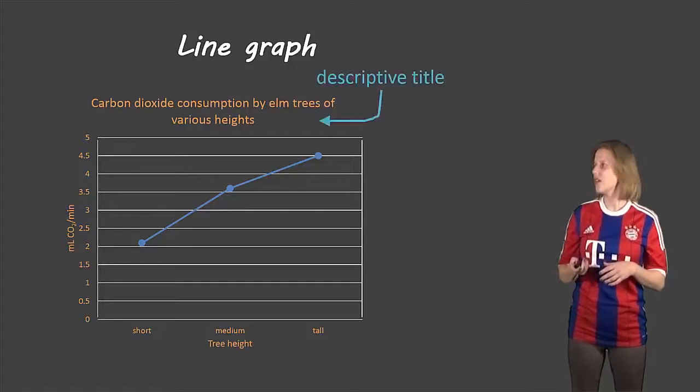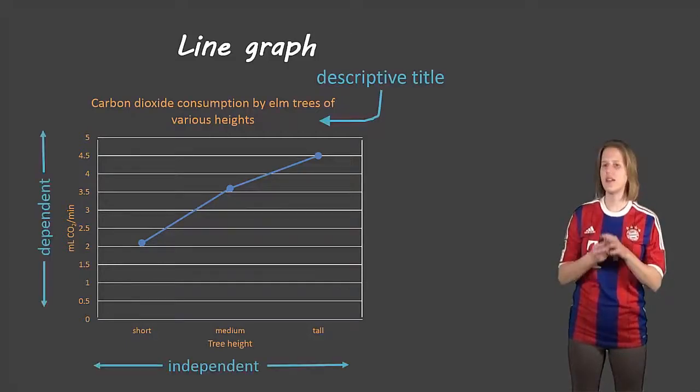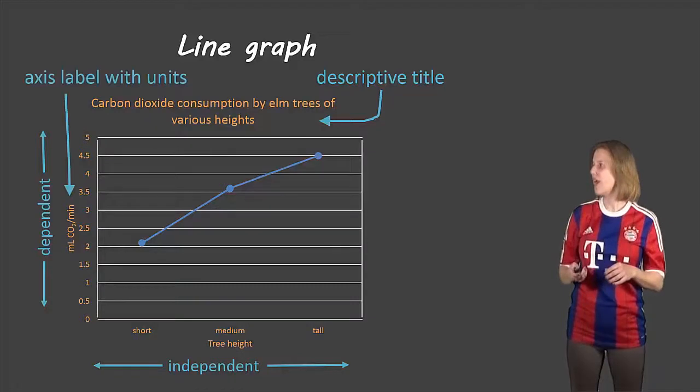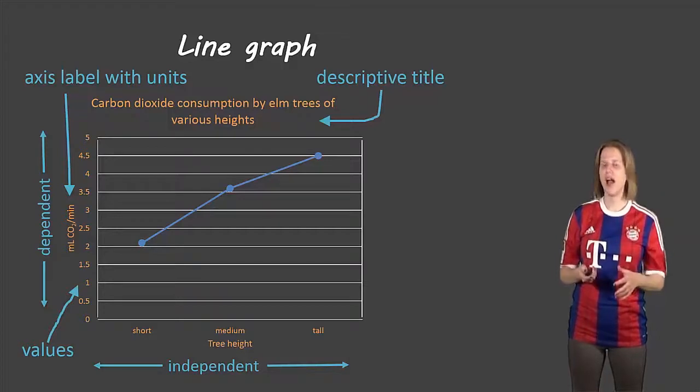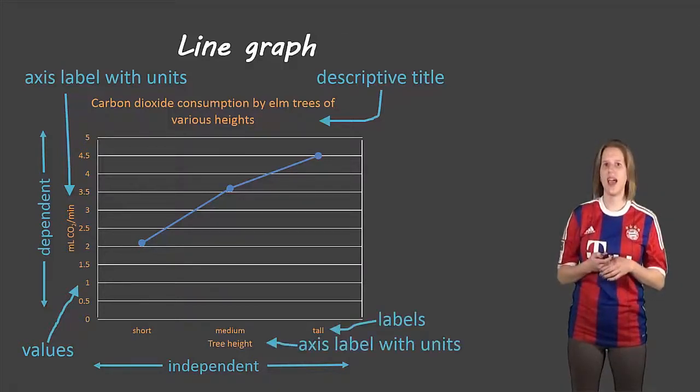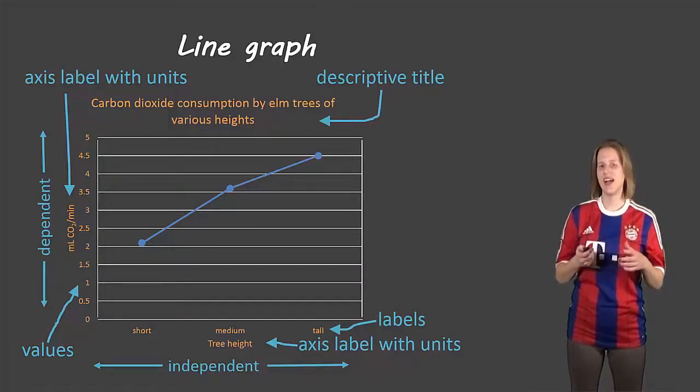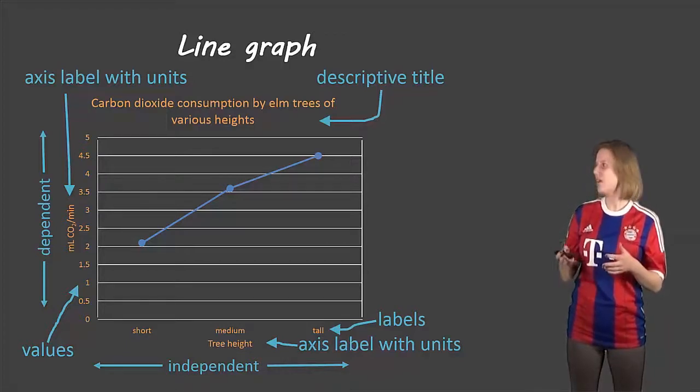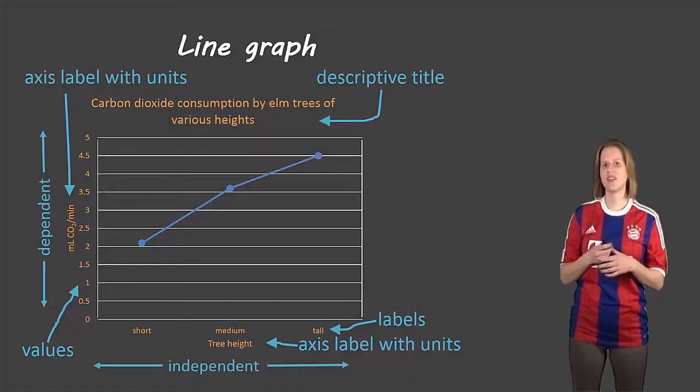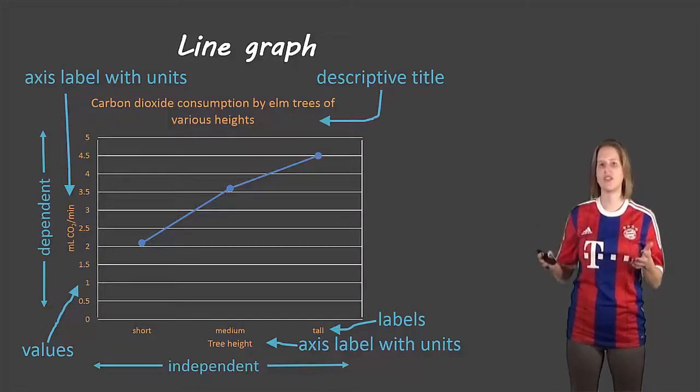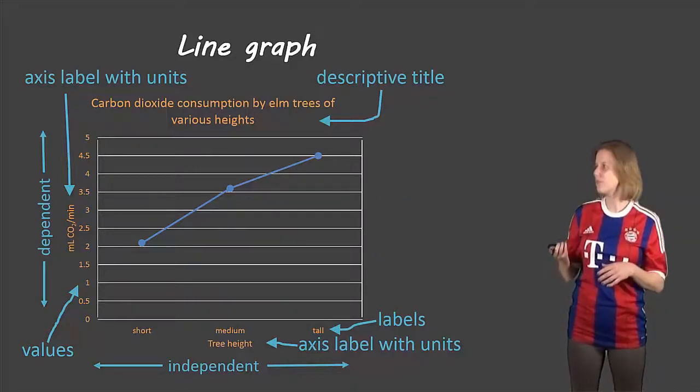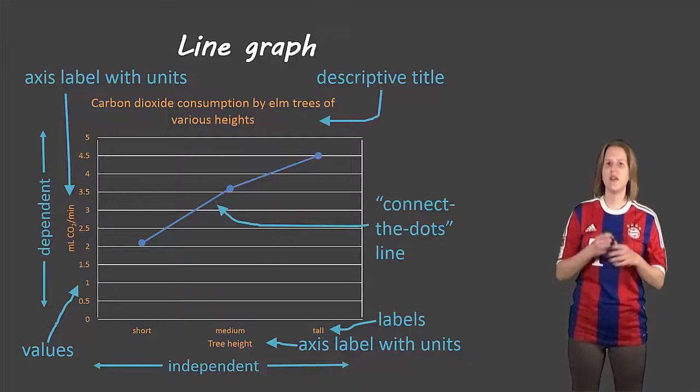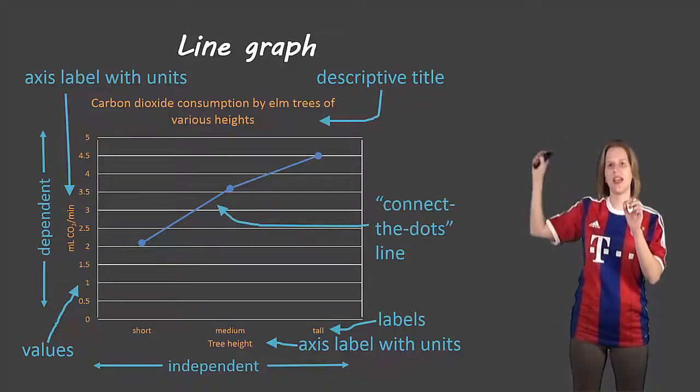The next ones are our line graphs. So again, a descriptive title, independent along the x, dependent along the y. We have an axis label with units and we have values, and that's along the y-axis, and we see the same thing along the x-axis. This one here, it depends on the actual experiment you're doing. I wrote axis label with units; in this case there were no units. Tree height, we're saying short, medium, and tall, so we don't have units with that one. So depending on the experiment, you may or may not have units for that. And then here, in between your data points, you're going to use almost like a connect-the-dots line.